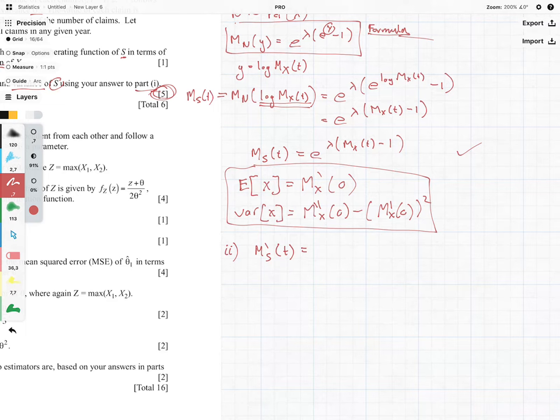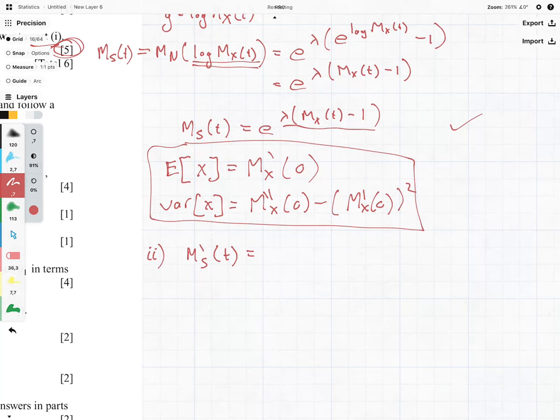we're going to bring this over here forward and take the derivative of that. So we have lambda M'x(t) times exponential lambda Mx(t) minus 1. That is the first phase. The tricky part there is taking the derivative of an exponential, bringing that term down, which I think we should all be comfortable with.